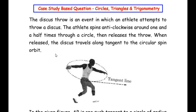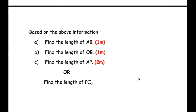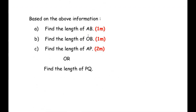Hello and welcome to my channel. In this video we are going to solve a case study based question which is a combination of circles, triangles and trigonometry chapters. This question has three sub-questions. The first sub-question is of one mark, the second one is of one mark, and the third sub-question is of two marks and it has an OR question as well — that is, either you can attempt the first one or the second one.